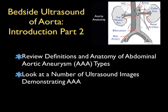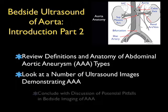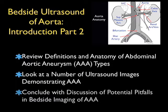We'll begin with a review of the definitions and anatomy of the types of abdominal aortic aneurysms that you may encounter in the emergency department. We'll look at a number of ultrasound images demonstrating AAAs, and we'll conclude with a discussion of the potential pitfalls in bedside imaging of an abdominal aortic aneurysm.